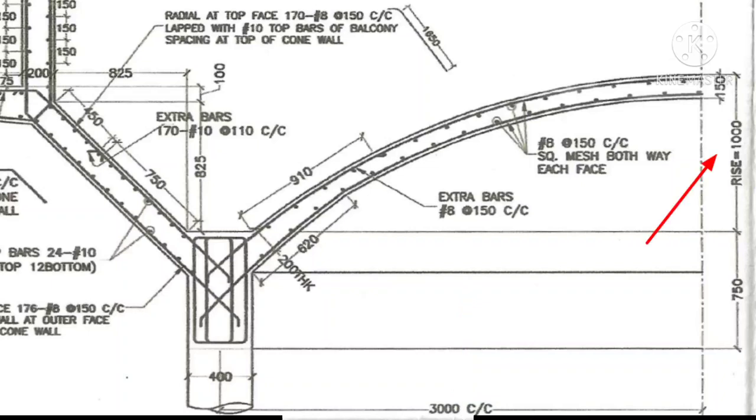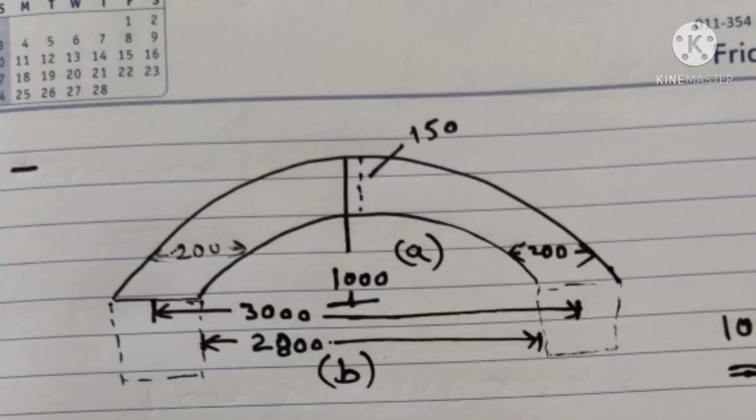So let's make a figure and start the calculation. The side was 200, the mid span is 150 mm, and its depth is 1 meter. The diameter is 3 meters.